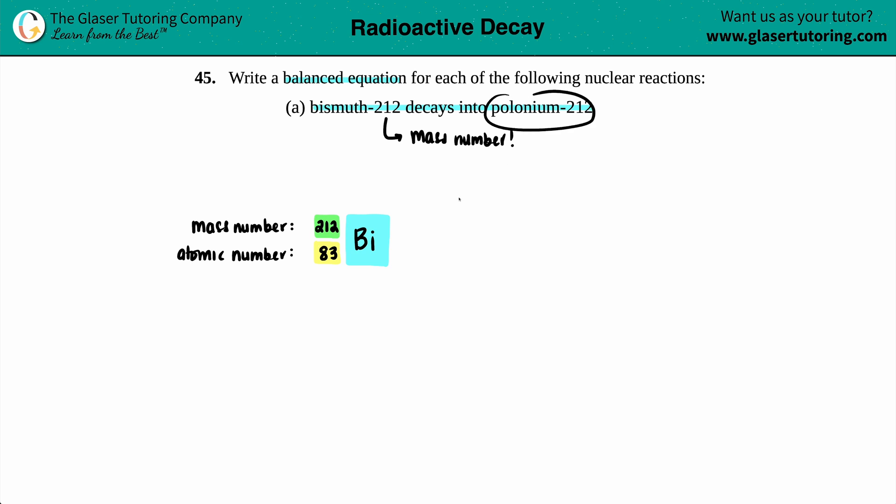Now we're just going to decay it into the polonium. I know that this is going to break down into polonium, so let's write out another nuclei notation. Polonium on the periodic table is Po. They're telling us that the 212, right, polonium-212, that's the mass number, so that's going to go up here, 212. And now what's polonium's atomic number? Well, on the periodic table, polonium is one step up. It's number 84.